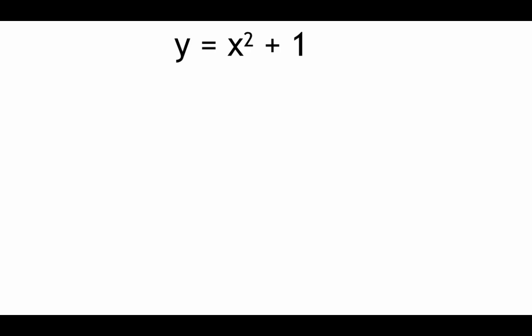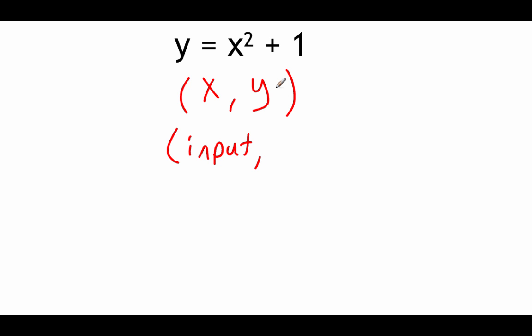Before we get into functions, I want to look at this equation and talk about what it means. We're looking at y equals x squared plus one. Any equation like this relates some x value we plug in to its y value answer, and we represent those as ordered pairs — x comma y. The x values are our inputs and the y values are our outputs.